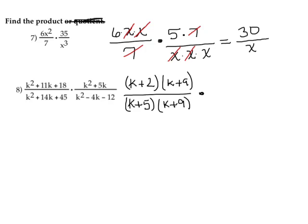Now the numerator of the second fraction: k squared plus 5k. This is a binomial, not a trinomial, and I see two k terms, so I can use greatest common factor (GCF) factoring. If I factor out a k, I get: k times k gives k squared, and k times 5 gives 5k. So the factored form is k times k plus 5.